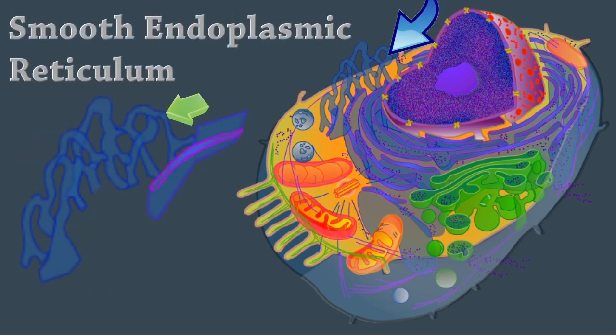The smooth endoplasmic reticulum is a membranous system of sacs and tubules that plays a part in several metabolic processes. It's free of ribosomes and synthesizes steroids, metabolizes lipids, and detoxifies drugs.